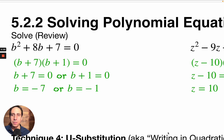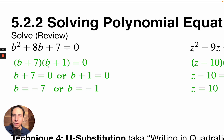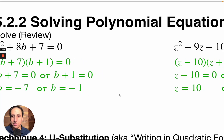Let's review what we've been doing. We've been splitting the middle: what two numbers multiply up to 7 and also add up to 8? It's 7 and 1. So you split it into two parts and get b plus 7 equals 0, or b plus 1 equals 0. Therefore the two solutions are negative 7 or negative 1.